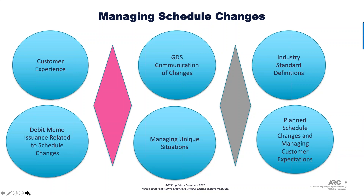What we want to do here is give customers transparency. We want agencies to be transparent, airlines as much as possible. We want the entire ecosystem of the irregular operation or schedule change process to function seamlessly. We're going to talk about GDS communication of changes. Many airlines are not utilizing the GDS to communicate schedule changes, which causes a lot of downstream problems for agencies, especially because they've built in automation to manage these queues.